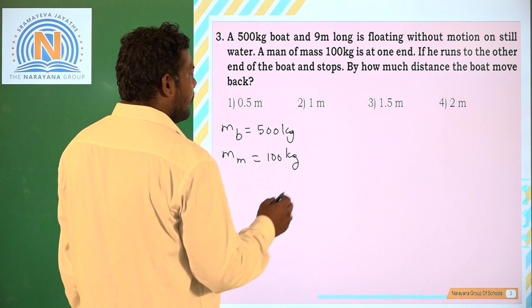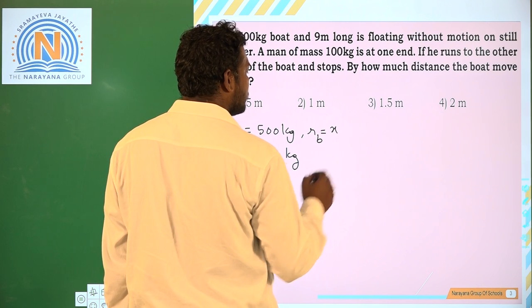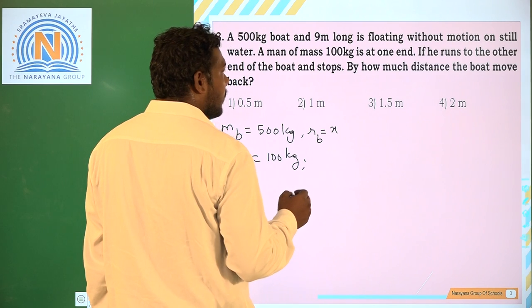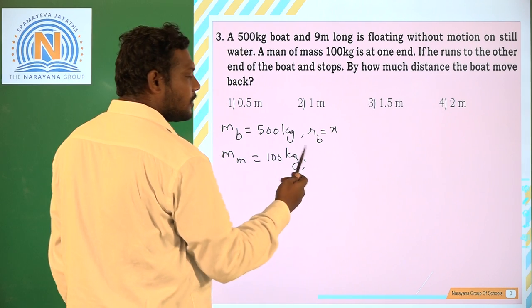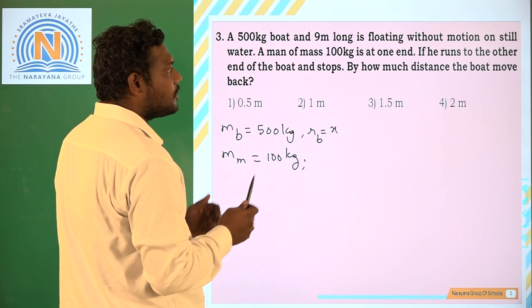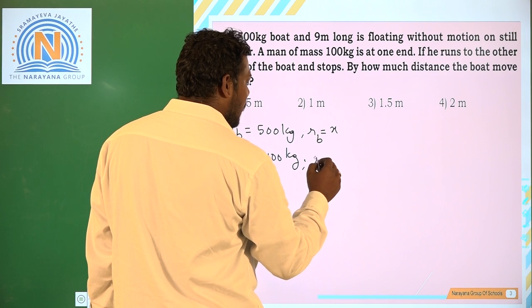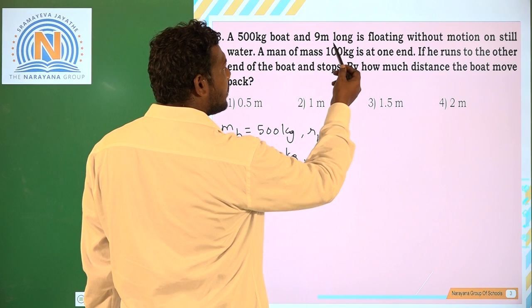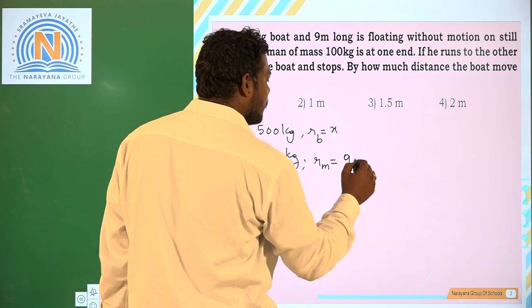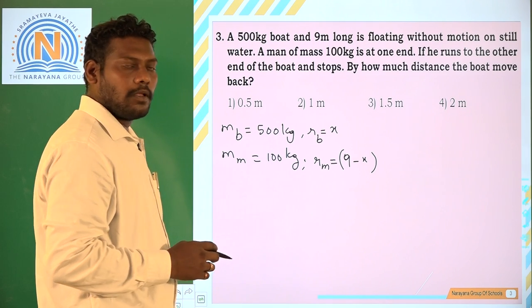Now here we need to find the position of boat. Let us say this x. And the man moves the total boat backwards. That is what is the changing position of the boat, how much the boat moves. And the position of the man is already it has moved 9 meters along the shore. So 9 - x.